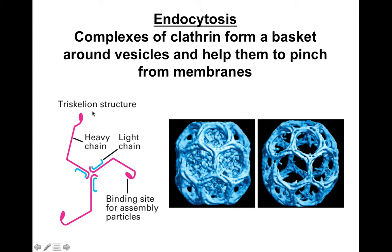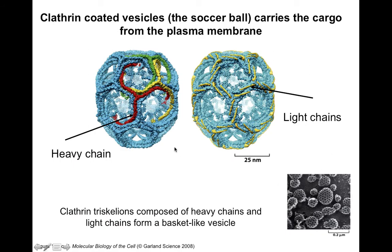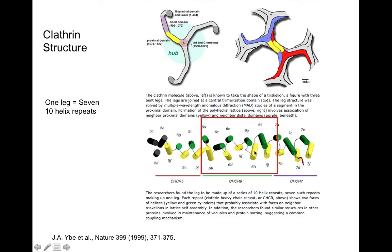Clathrin itself has a triskelion structure, sort of like a tri-legged structure. The ones in pink or magenta are the heavy chains — there are three heavy chains and three light chains. This triskelion structure assembles into a basket; you can see one triskelion, then another, and so on, forming a socket-like structure that carries cargo from the plasma membrane. The clathrin-coated vesicles are made of alpha helices, and one leg of clathrin contains seven of these ten-helix repeats.